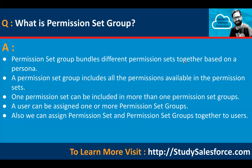What is a permission set group? A permission set group bundles different permission sets together based on a persona. It includes all the permissions available in those permission sets. If you have five permission sets, instead of individually assigning them to users, you can club all of them into a permission set group and assign just the group — all those permissions will be applied automatically. One permission set can be included in more than one permission set group, and a user can be assigned one or more permission set groups. You can also assign permission sets and permission set groups together to a user.